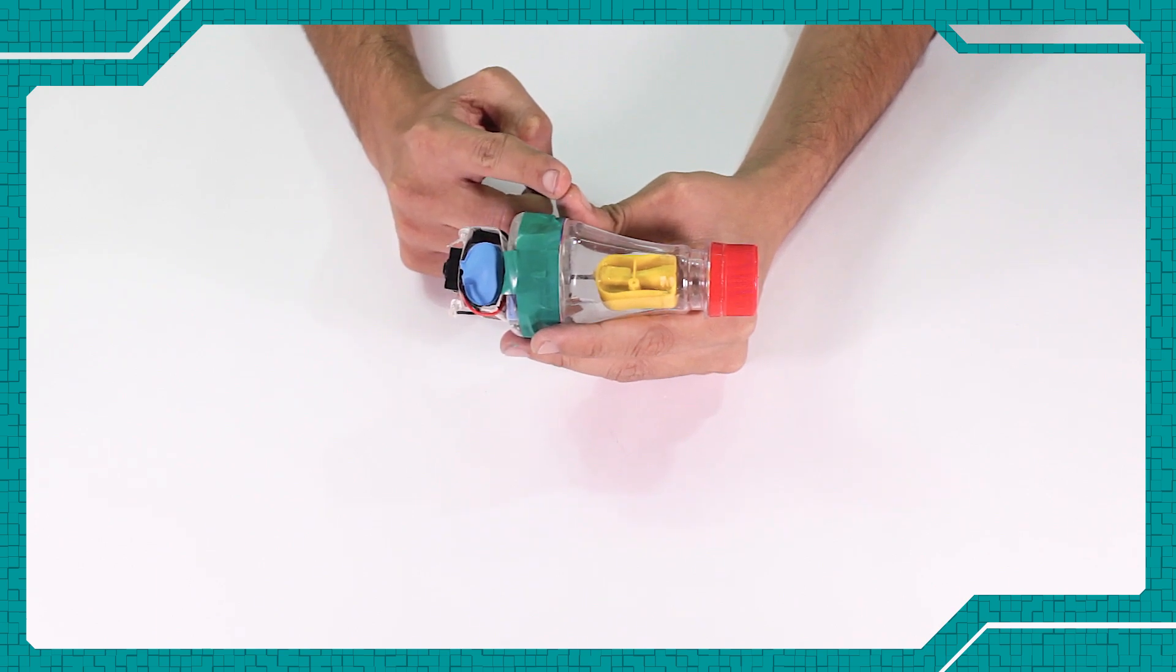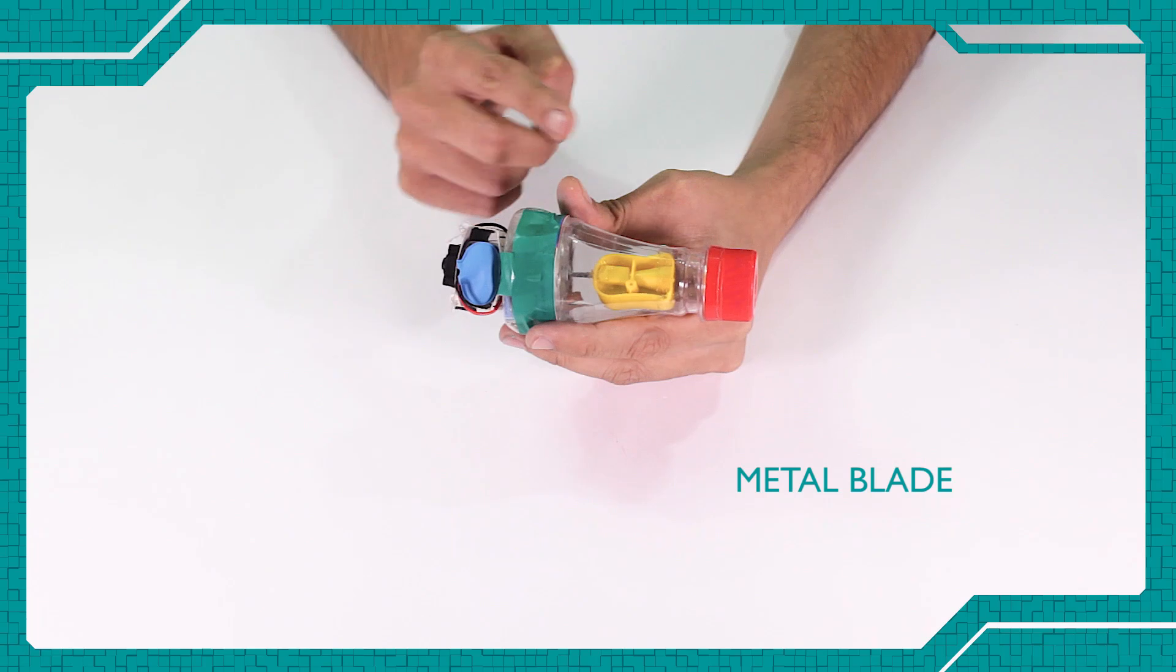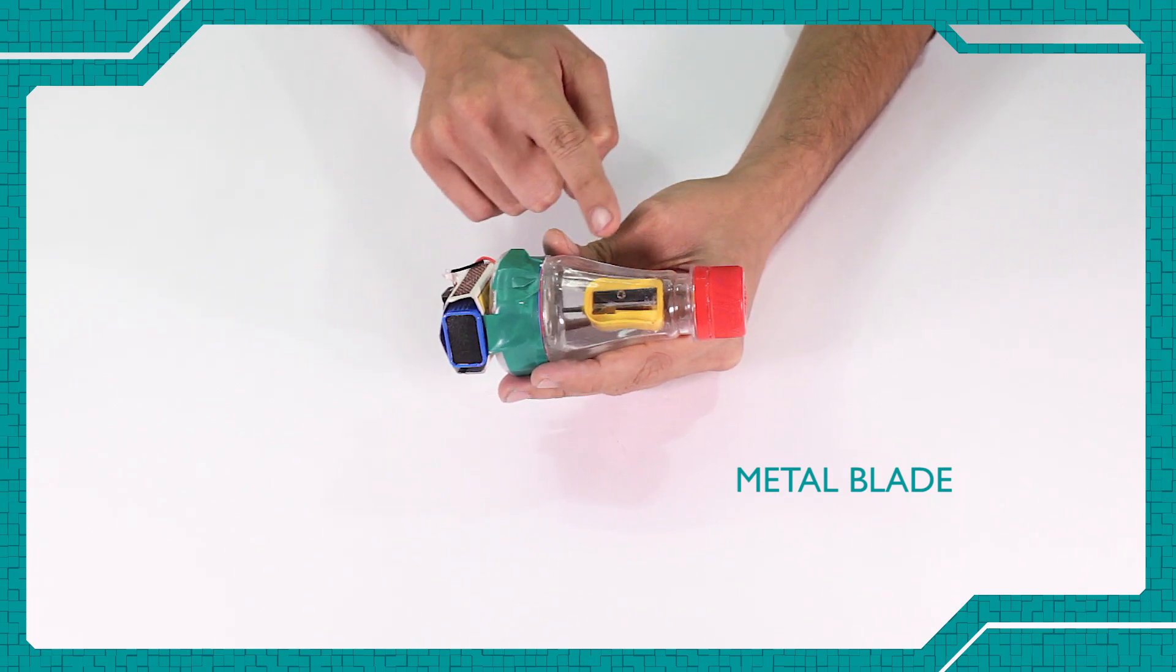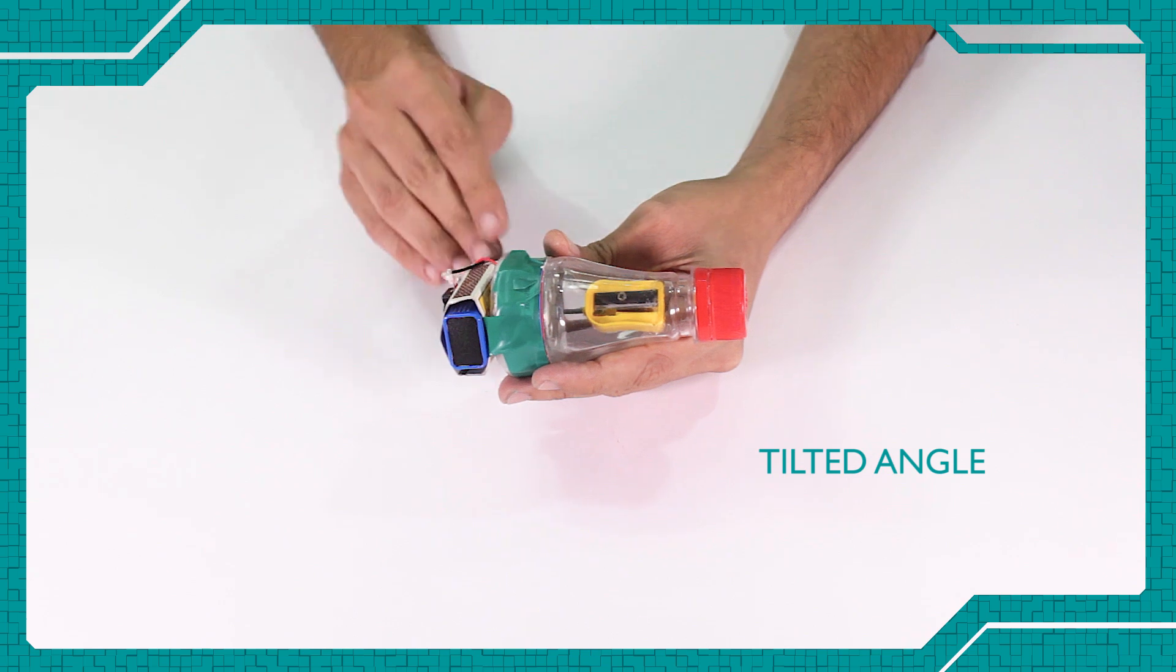When the pencil is placed inside the entrance of the sharpener where there is a sharp metal blade, as you can see out here, this blade has a special tilted angle.